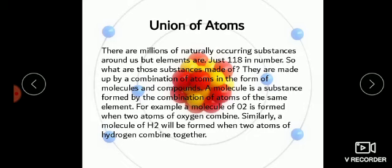Jo substances hain jo element ke ilawa hain, woh atoms ke combination se bante hain. Jab atoms combine hote hain toh woh molecule mein convert ho jaate hain ya phir compound. A molecule is a substance formed by the combination of atoms of the same element. In molecules, jo atoms hote hain woh two ya two se zyada hote hain, lekin unki type same hi hoti hai.